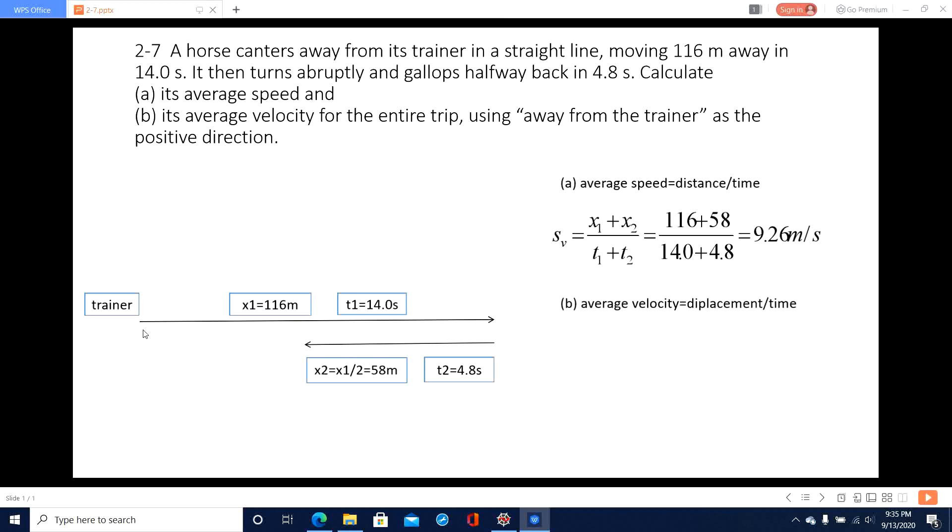So initial position to final position, it becomes x1 minus this length, so it becomes this part. So x1 minus x2 divided by total time taken.